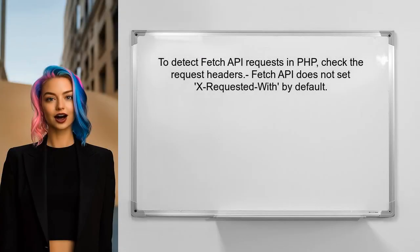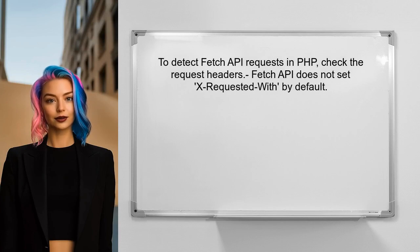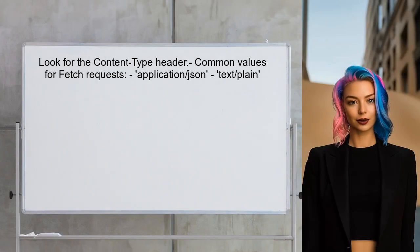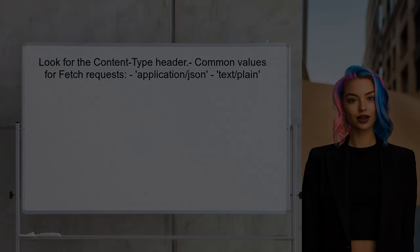To detect fetch API requests in PHP, you can start by checking the request headers. Unlike traditional Ajax requests, fetch API requests do not automatically set the X-Requested-With header. Instead, you can look for the Content-Type header. Fetch requests often use application/json or text/plain, which can be a reliable indicator of a fetch request.